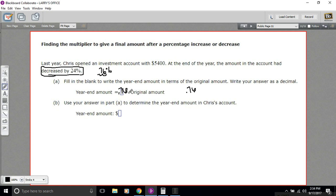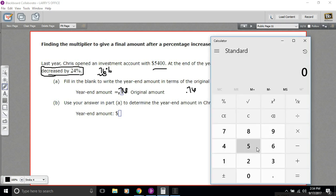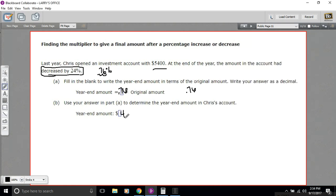All we need to do here is multiply 0.76 times the original amount, which is 5400. So 0.76 times 5400, and Chris has $4,104 left in the investment account. That is how to find what they call a multiplier to give a final amount after an increase or decrease.